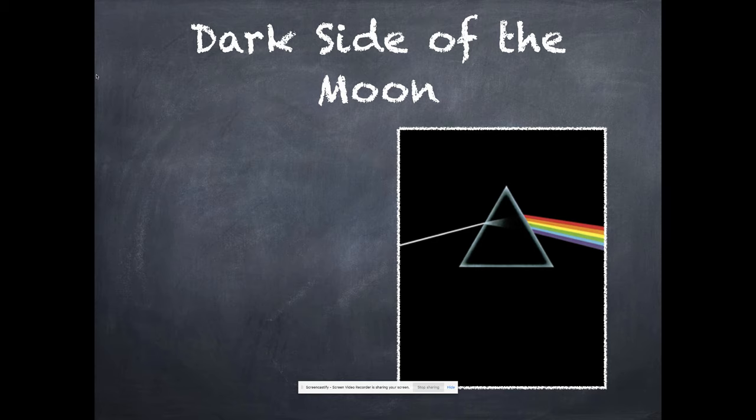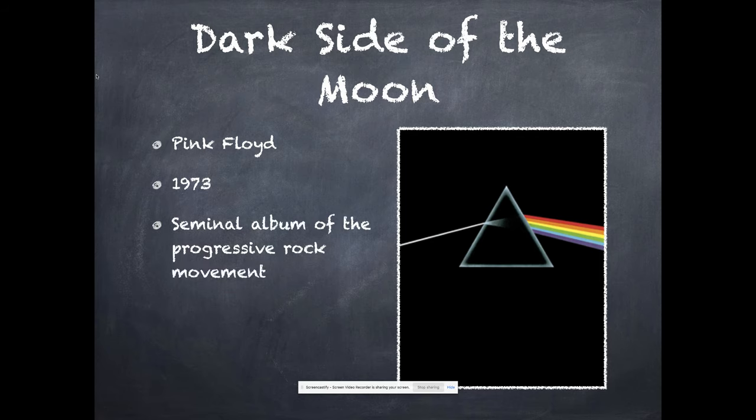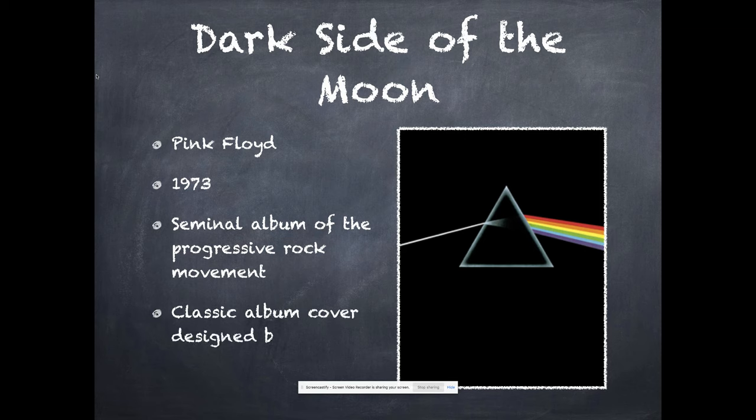So if you're a fan of album of the week, you know that we've talked about Dark Side of the Moon by Pink Floyd. 1973 album, truly just one of the seminal albums of the progressive rock movement, probably the peak of the progressive rock movement. And this very well-known classic album cover designed by hypnosis. The problem is it's wrong. You see the prism and you see the rainbow coming out on the other side, except it's not a proper rainbow.